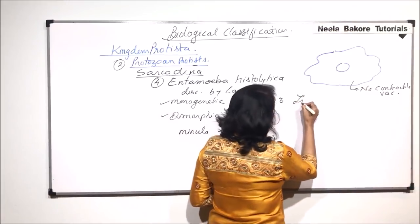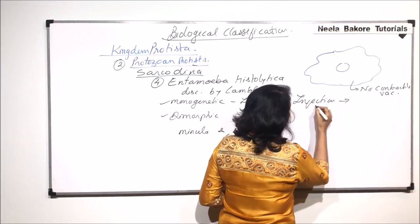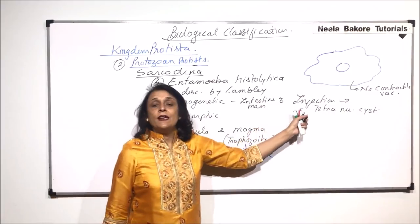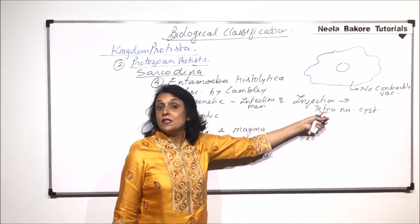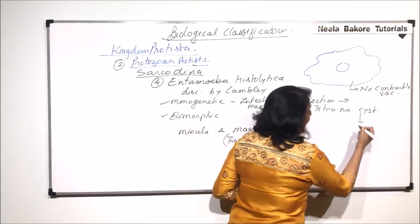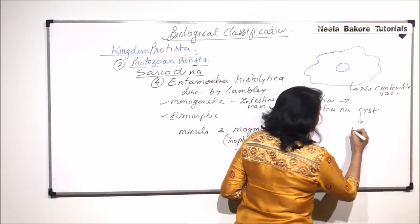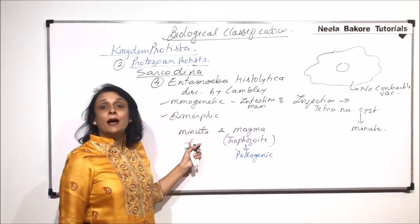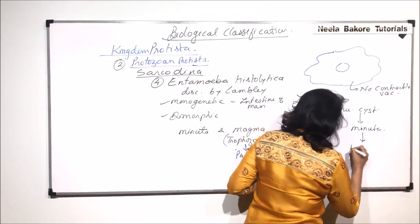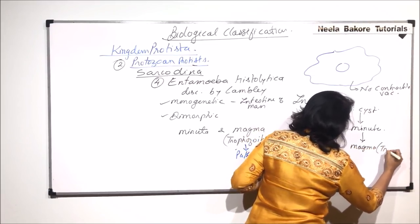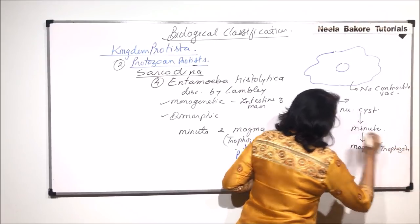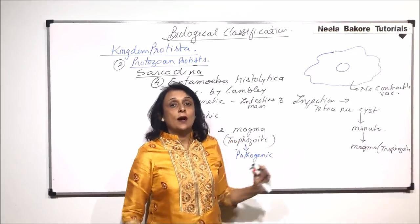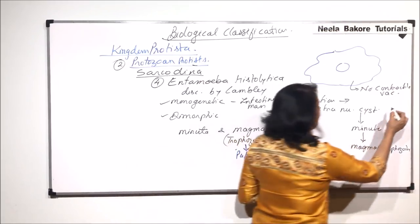The infection is transmitted in the form of a tetranucleate cyst. When we consume food contaminated with these tetranucleate cysts, the cyst enters our digestive system, where it changes into the minuta stage first, and then the minuta stage changes into the magma stage, which is the trophozoite. The cyst is tetranucleate — it has four nuclei.